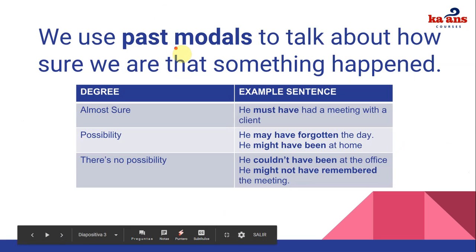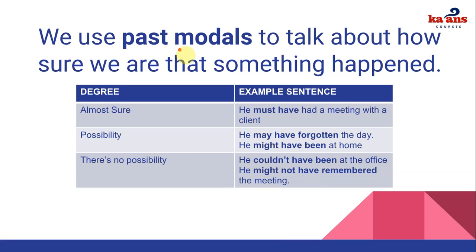In the first part, we have past modals. The modals we're focusing on are must, may, might, and could. A past modal combines the modal with the present perfect, meaning we combine it with 'have.' So we get forms like must have, may have, might have, couldn't have, and might not have.